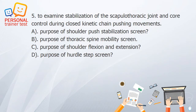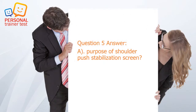Question 5. A. Purpose of shoulder push stabilization screen. B. Purpose of thoracic spine mobility screen. C. Purpose of shoulder flexion and extension. D. Purpose of hurdle step screen. Answer: A. To examine stabilization of the scapulothoracic joint and core control during closed kinetic chain pushing movements — purpose of shoulder push stabilization screen.